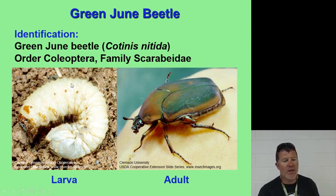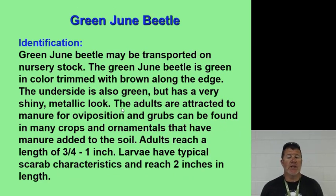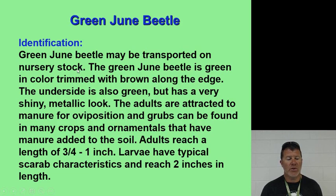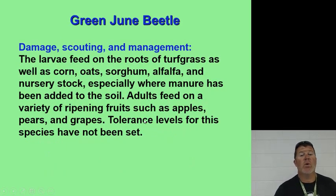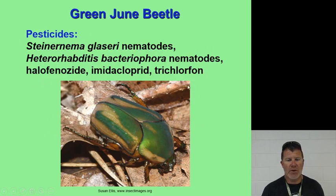The green June beetle larva looks a lot like the Japanese beetle larva, and the adult is green with brown trim along the edge, with a very shiny metallic look. Adults are attracted to mature fruit for oviposition, and grubs can be found in crops and ornamentals where manure has been added to the soil. They reach nearly two inches in length and feed on the roots of turf grasses as well as corn, oats, sour gum, alfalfa, and nursery stock. Tolerance levels for this species have not been set. Pesticides include nematodes.